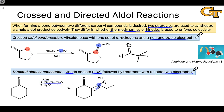This method also leads generally to the beta-hydroxy ketone or aldehyde product — the product of aldol addition. If we want to form the aldol condensation product, often heating with acid or base is required after running this process.